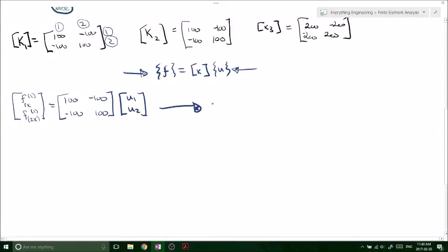This is for element 1. So now we can see that we have our f1x, f2x, our u1 and u2. We know that u2 equals 0 from a fixed support.